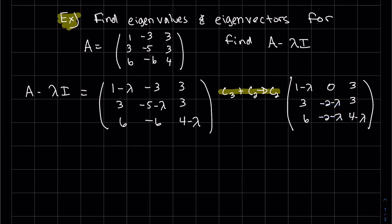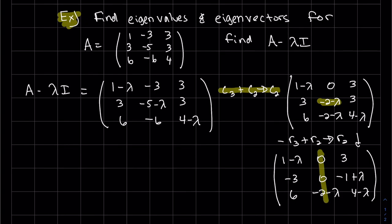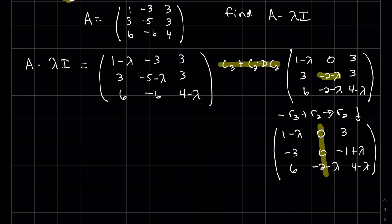I'm going to go ahead and switch back to rows and zero that out right there. That'll zero that out. Minus row three plus row two to row two. And so now finding the determinant will be much simpler. I will use this column. So we're going to set the determinant equal to zero.